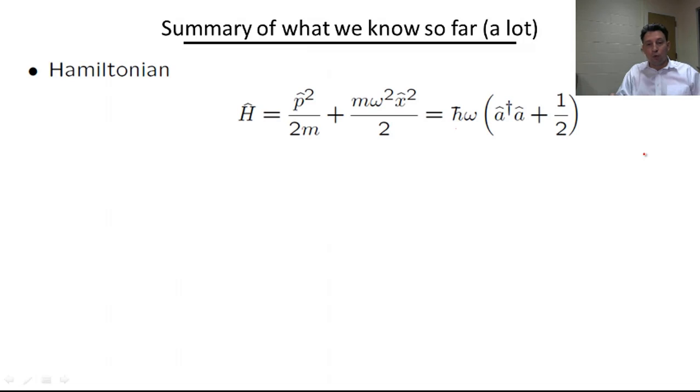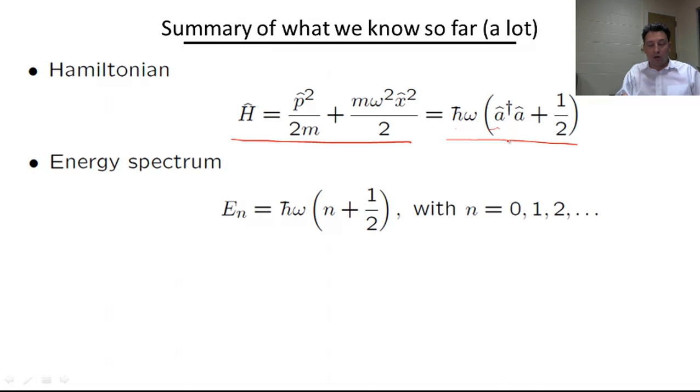First of all, we found a way to represent the harmonic oscillator Hamiltonian in this compact form in terms of creation and annihilation operators, and using the algebra or commutation relations of these operators, we derived the energy spectrum of the oscillator, which has this form: h omega times n plus one half, where n equals zero, one, two, etc. This spectrum is special in that the level spacing between neighboring levels is always the same, so it doesn't change as we go higher up in energy.